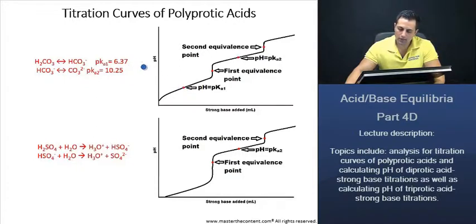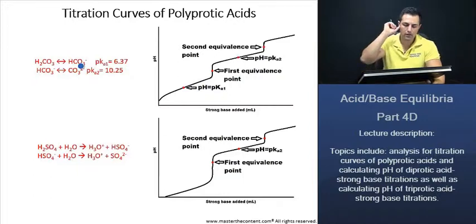Now, if there's any pH less than 6.37, we're going to have more carbonic acid concentration than our bicarbonate. Any pH above 6.37 in this region, we're going to have more, you guessed it, bicarbonate. Okay, great.